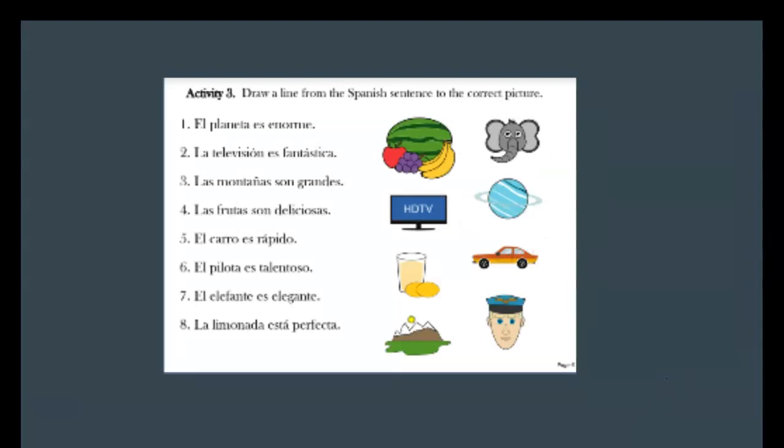So activity three is going to be to draw a line from the Spanish sentence to the correct picture. You could number them too if you don't want to do lines and make it all messy. So number one, el planeta es enorme. Two, la televisión es fantástica. Three, las montañas son grandes. Four, las frutas son deliciosas. Five, el carro es rápido.